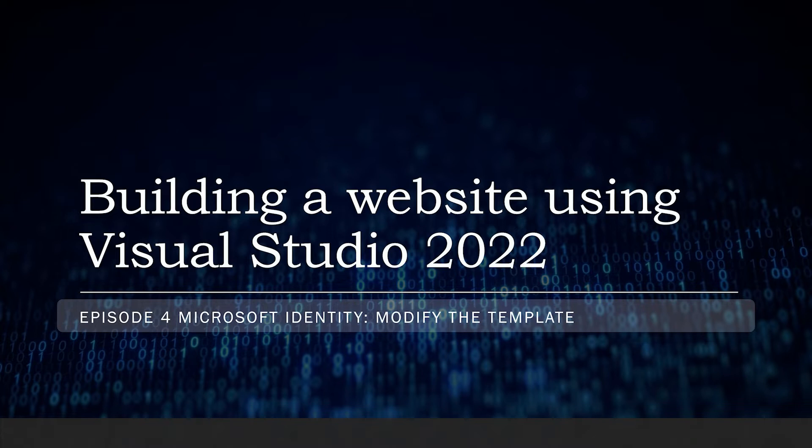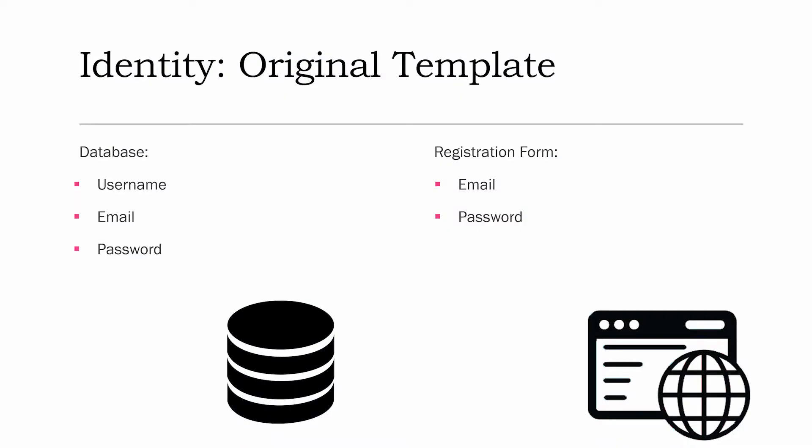Welcome to episode four of building a website using Visual Studio 2022. In this video we're going to continue using Microsoft Identity and modify the template as requested. So if you don't remember what the template was, here's a brief example. We've got a database and a registration form. On the database we've got a username, an email, and password entry. On the registration form we've got an email and password, and also a confirmed password, but we're only focusing on the information that's actually being transmitted across.